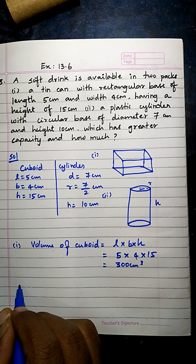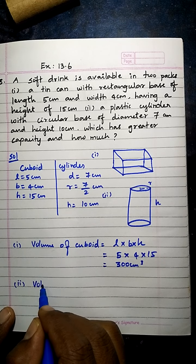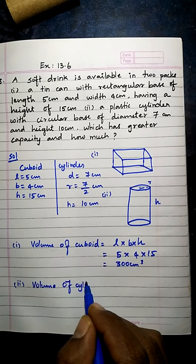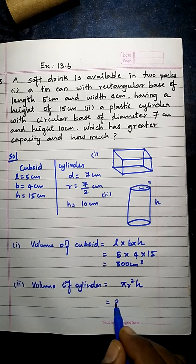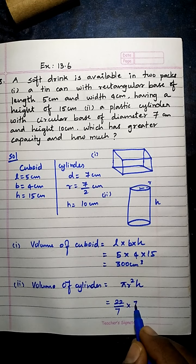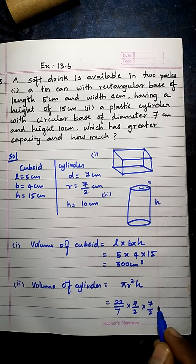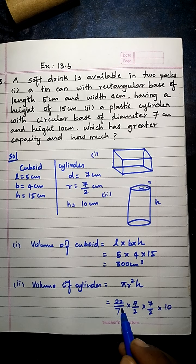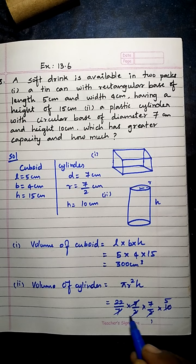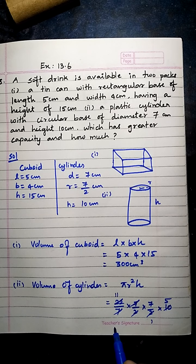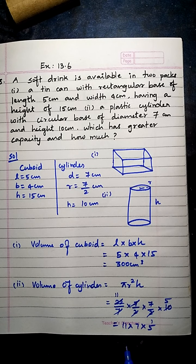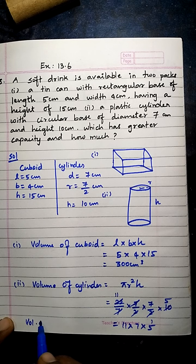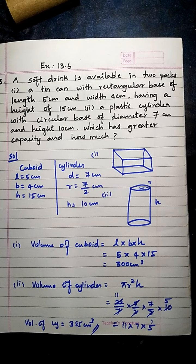Now let's find the volume of the cylinder. Volume of cylinder = π r² h = (22/7) × (7/2) × (7/2) × 10. Cancelling, we get 11 × 7 × 5 = 385. So the volume of the cylinder is 385 cm³.